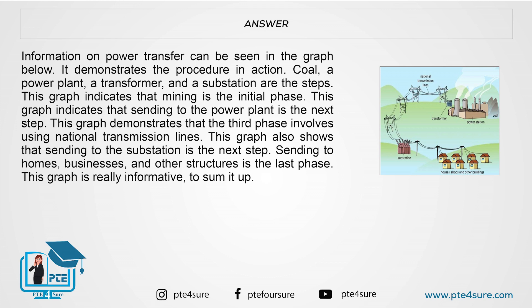Information on power transfer can be seen in the graph below. It demonstrates the procedure in action. Coal, a power plant, a transformer, and a substation are the steps.